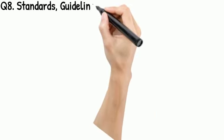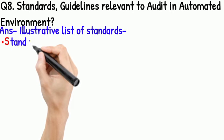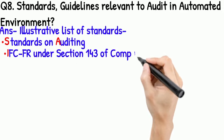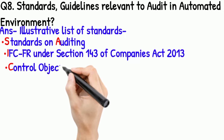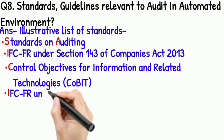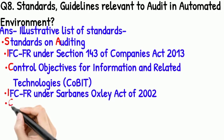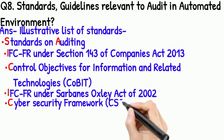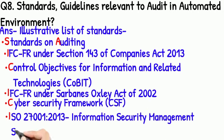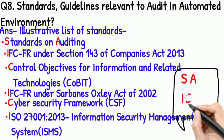Question 8: Standards and guidelines relevant to auditing in an automated environment. The mnemonic is AISE ICAC BANK. SA stands for Standards on Auditing, I for IFCI — International Financial Control in Section 143, C for COBIT — Control Objectives for Information and Related Technology, IFC under Sarbanes-Oxley Act of 2002, C for Cybersecurity Framework, and ISO 27001/2013 — the Information Security Management System.